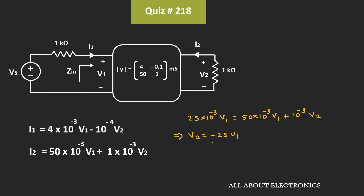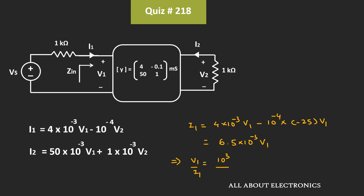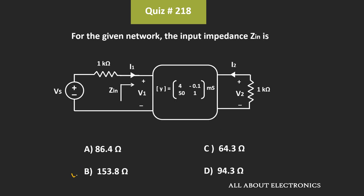Now let's put this value of v2 into the first expression, since we want to find the input impedance Zin = v1/i1. Substituting v2 = −25·v1, we get i1 = 4×10⁻³·v1 − 10⁻⁴·(−25·v1) = 6.5×10⁻³·v1. Therefore, v1/i1 = 10³/6.5 = 153.85 Ω. So the input impedance Zin = 153.8 Ω, meaning option (b) is the correct answer.